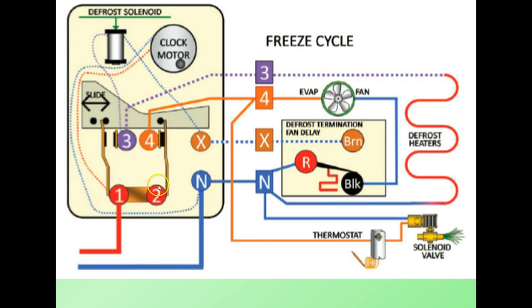The last load we're going to look at is the defrost heaters. They are always connected to neutral. Let's see where we are with our power. 115 volts comes to terminal 3, comes back down here to terminal 3, and terminal 3 is not made, so the defrost heaters are off.